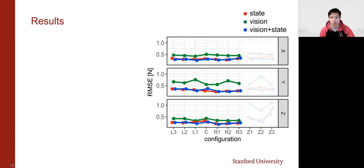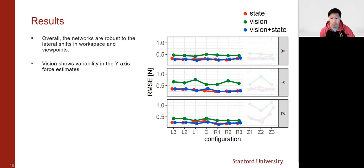The plot here shows the root-mean-squared error for each configuration over each axis of predicted force. Over the lateral shifts, we see that each network type has prediction accuracies that do not vary much, though the vision network shows some variability in the y-axis and x-axis.